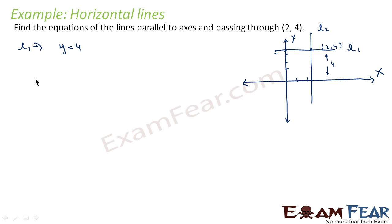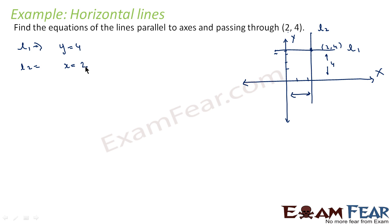Similarly for line l2, we see that this line is parallel to the y-axis. So the equation is of the form x is equal to k, and here k is equal to 2 because the point (2, 4) is part of this line. So x is equal to 2 is the equation of this line. We have formed the equations of both lines: y is equal to 4 and x is equal to 2.